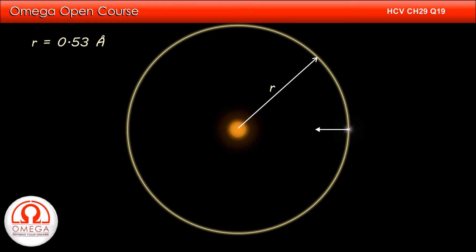If v be the speed of the electron and m its mass, then required centripetal force is mv square by r which must be equal to ke square by r square.